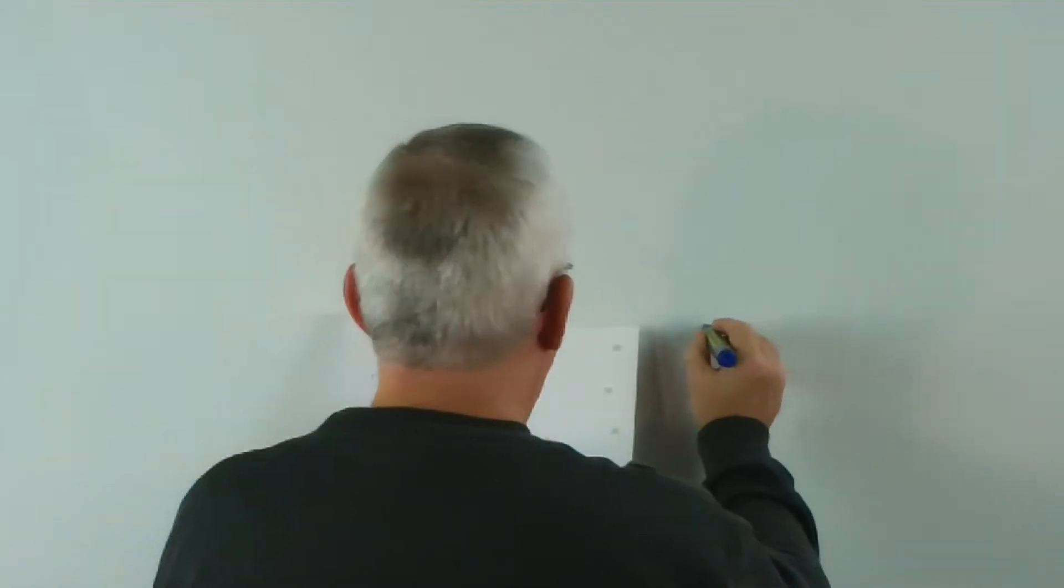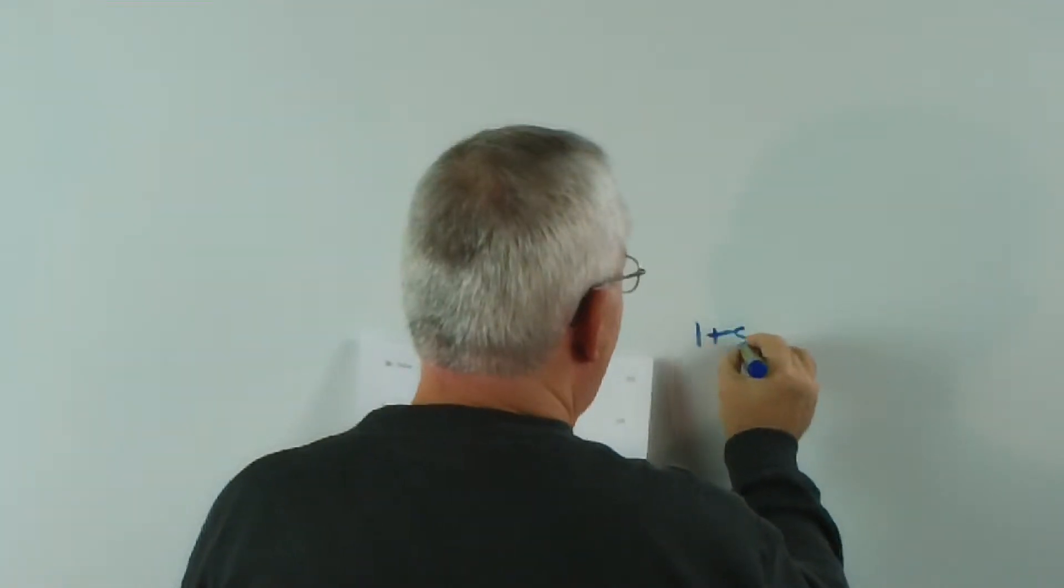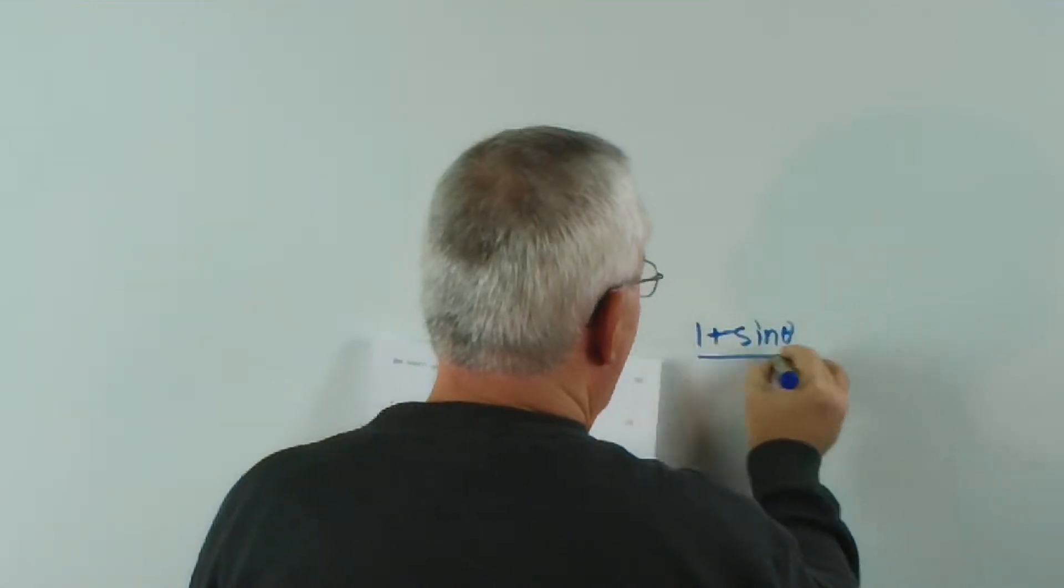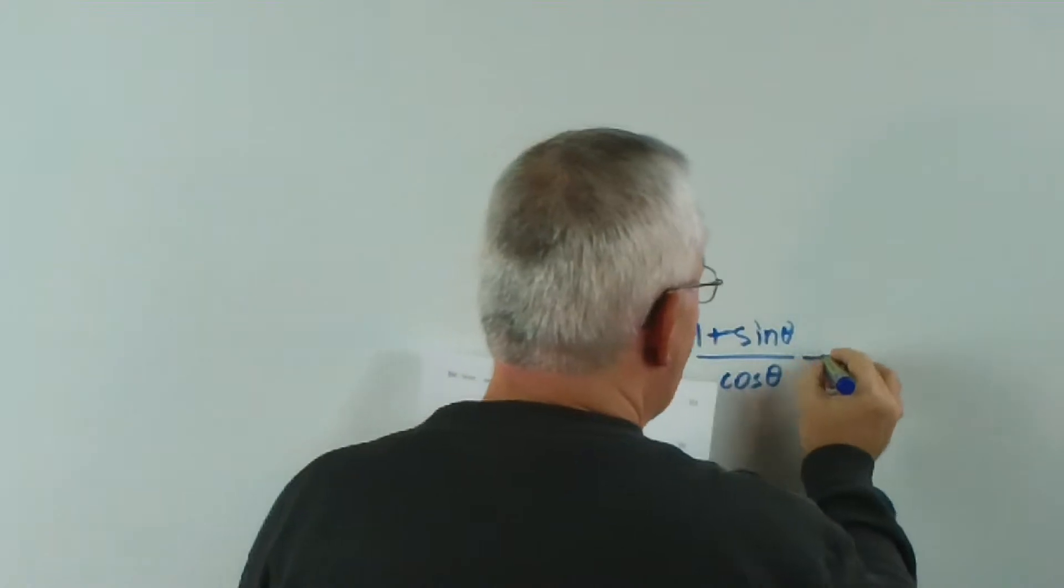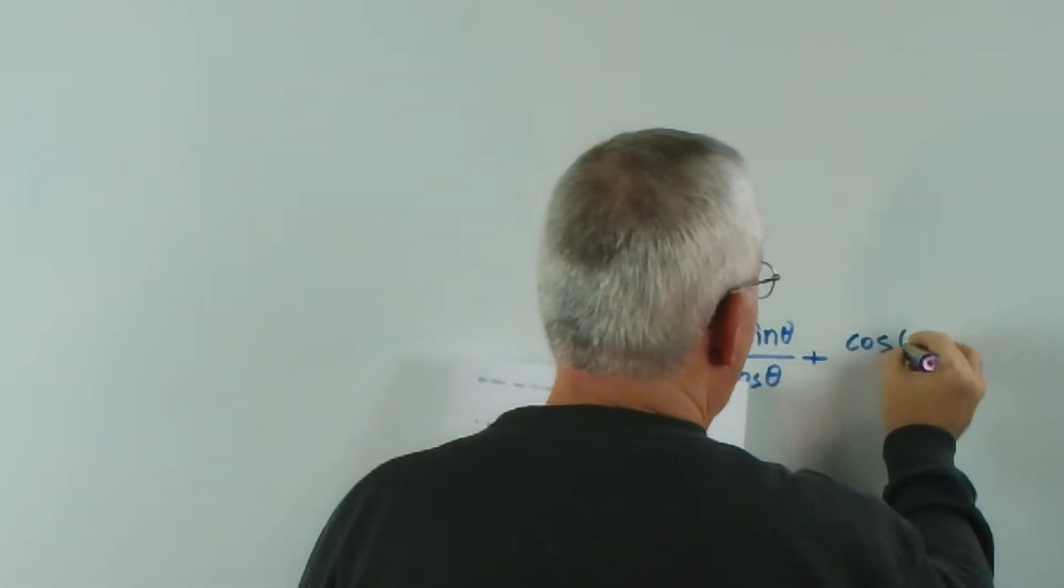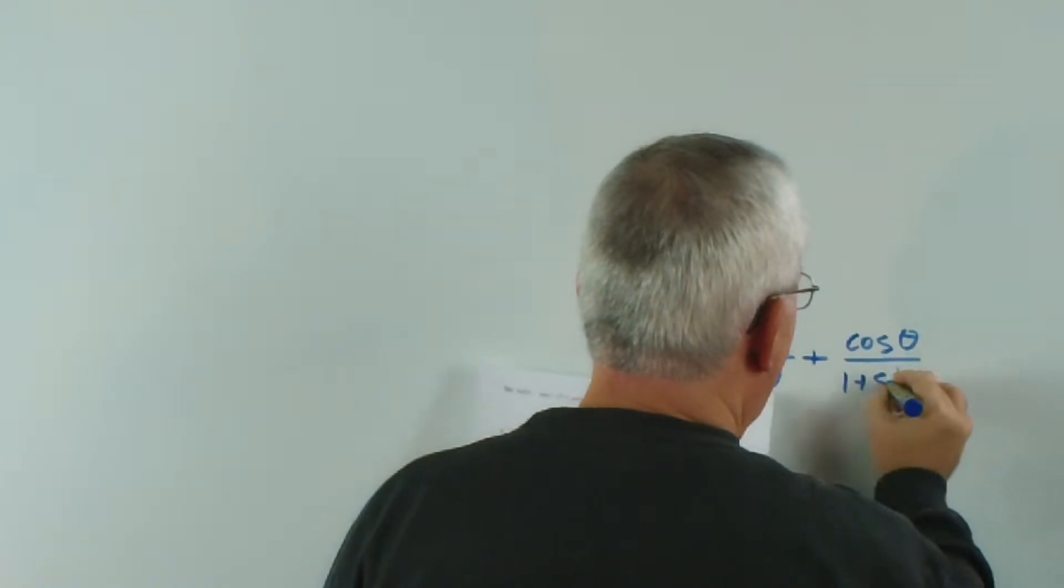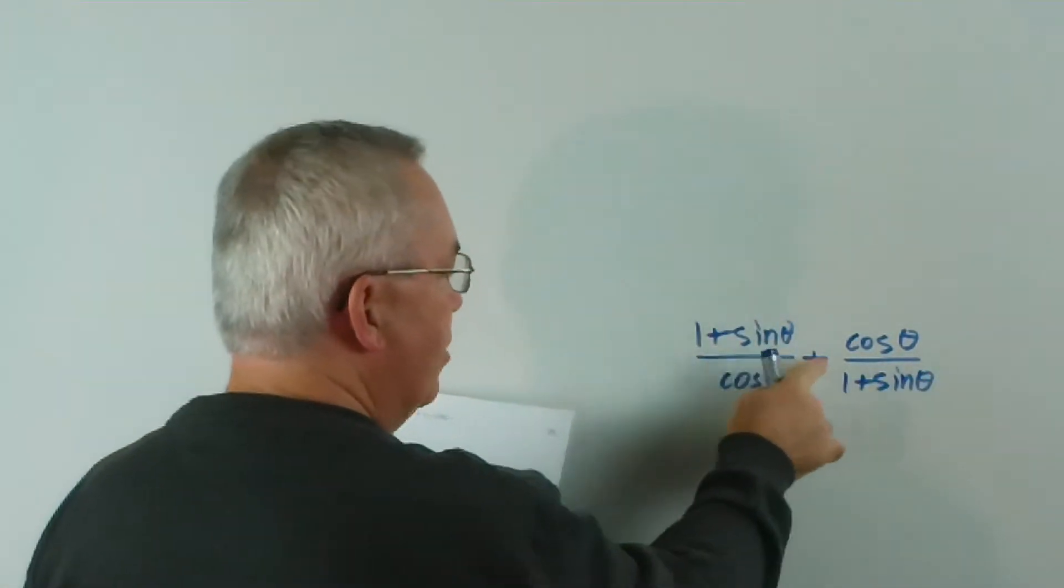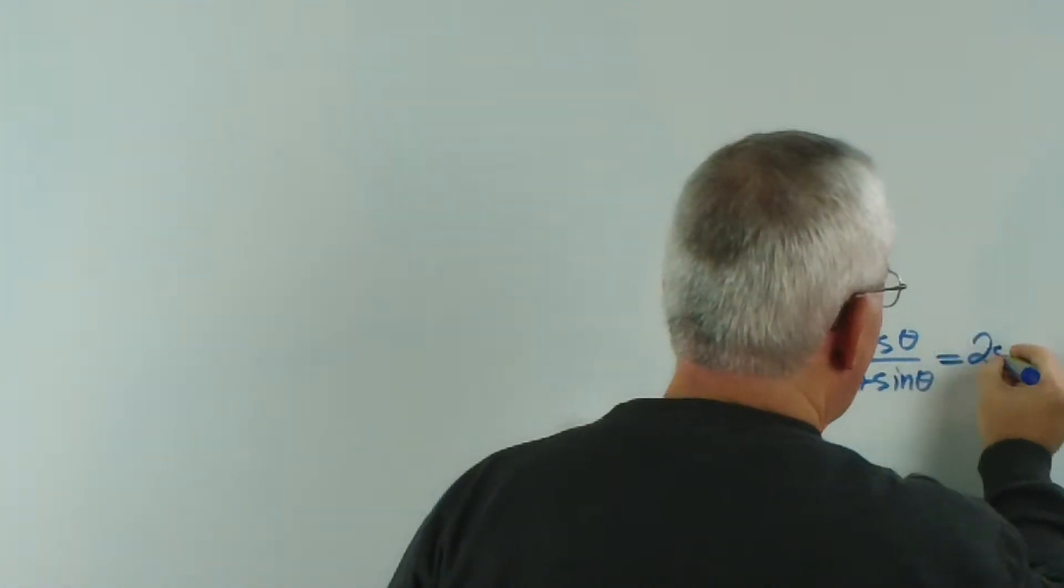It's another trigonometric identity. And here it is, we've got to show that 1 plus sin θ, all divided by cos θ, plus cos θ over 1 plus sin θ, so it's a fraction plus its reciprocal, is going to be 2 sec θ.